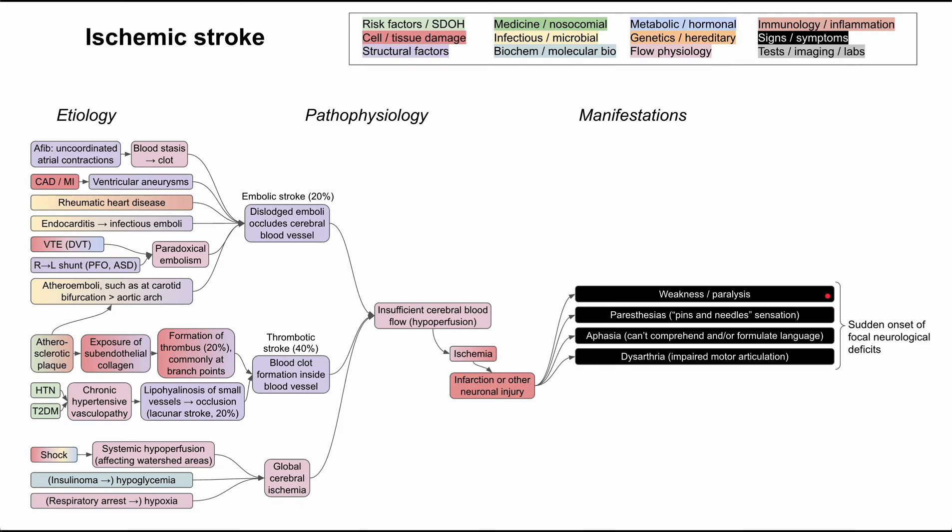So these symptoms include weakness or paralysis of one or more limbs of the body. You can also have paresthesias, that's the pins and needles sensation that you might have in one of your limbs. You can have aphasia, that's when a person can't comprehend or formulate language.